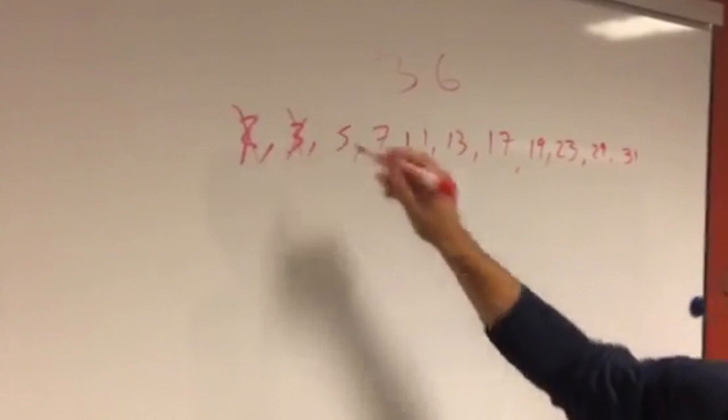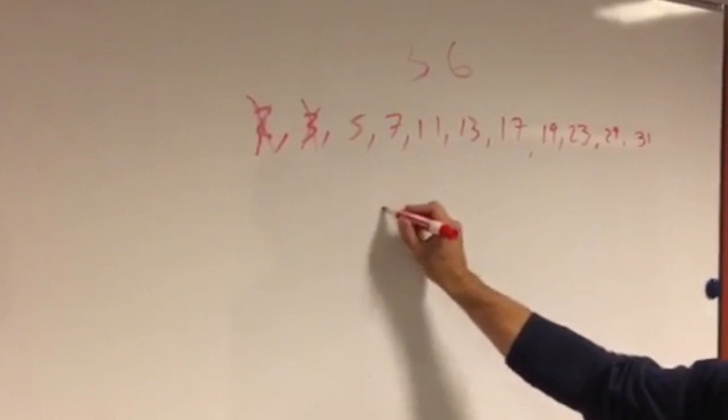Five is a prime number. Five plus thirty-one, which is also a prime number, works. So, five and thirty-one do work.